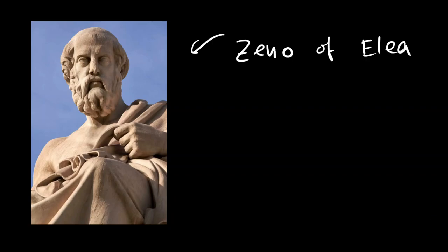This is Zeno of Elea, the philosopher who had too much time on his hands. He gave out many paradoxes, and this is one of them, presenting to you Zeno's Dichotomy Paradox.